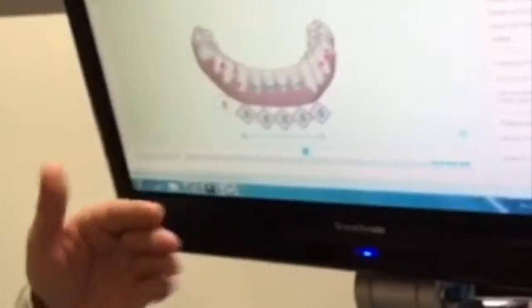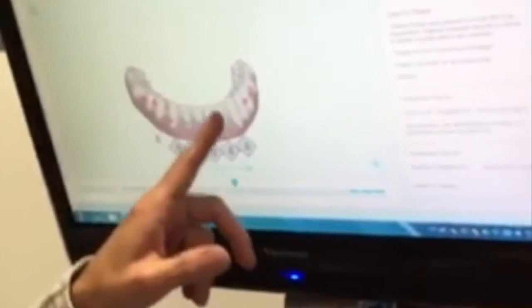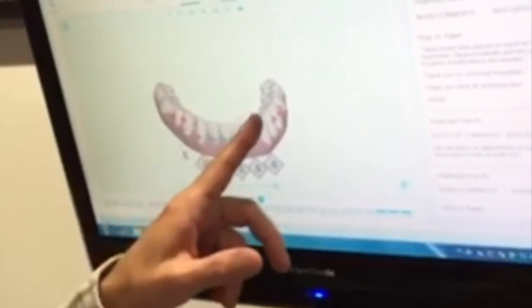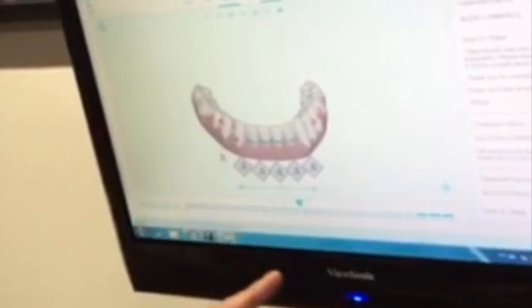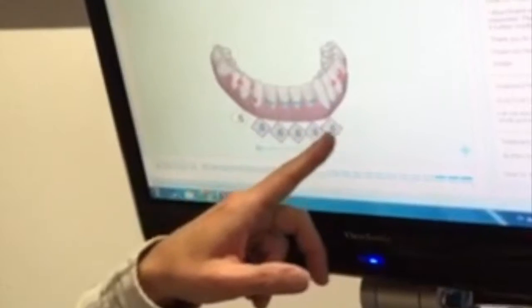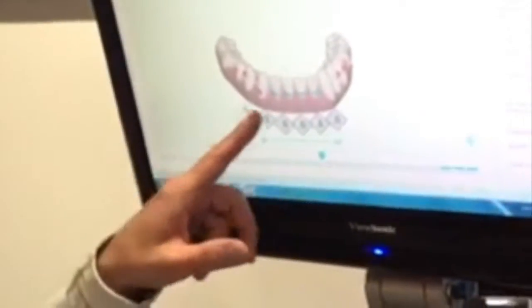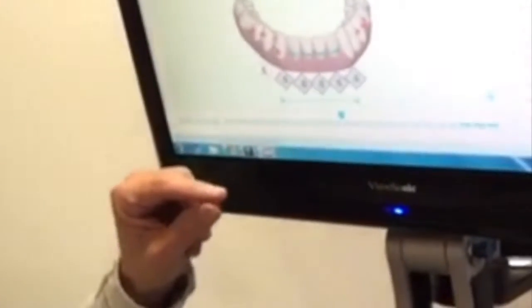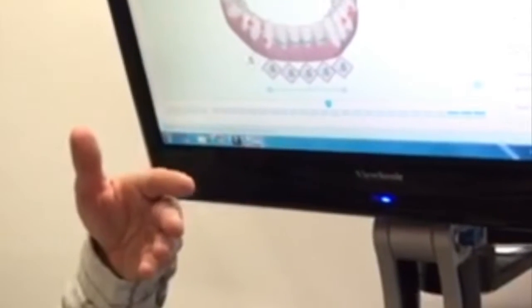Because in the beginning, we've created some space between these teeth in the anterior from canine to canine. And over the course of the treatment, we've now finally reached the point where we've completed the 0.6 millimeters required in order to create the space to move your teeth into alignment.